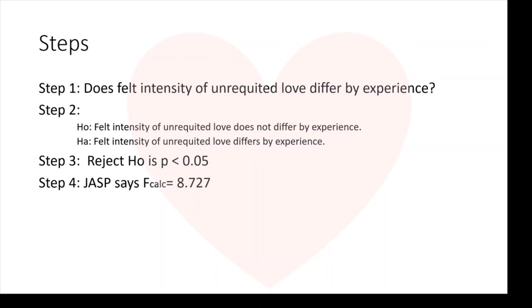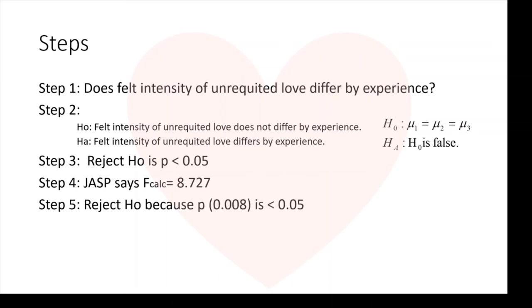We just calculated this in JASP and found our calculated F was 8.727. We have steps 1, 2, 3, and 4 done. From our JASP report, the result was significant because p = 0.008, which is less than 0.05. So for step five, we reject the null — we can no longer say felt intensity does not differ by experience. Instead: felt intensity of unrequited love differs by experience.